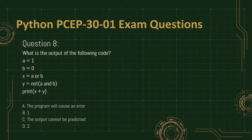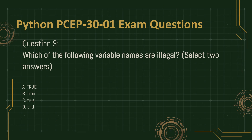Question 8. What is the output of the following code? A equals 1, B equals 0, x equals A or B, y equals not A and B. Print x plus y. A. The program will cause an error. B. 1. C. The output cannot be predicted. D. 2.